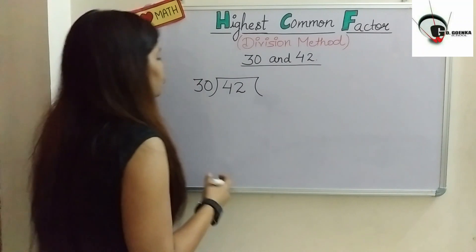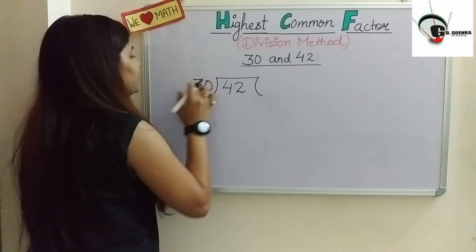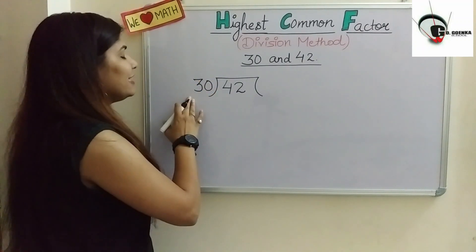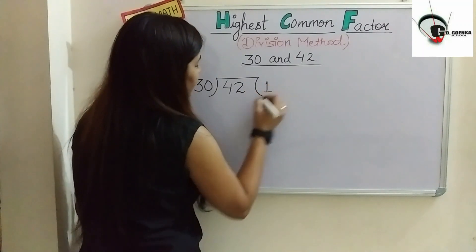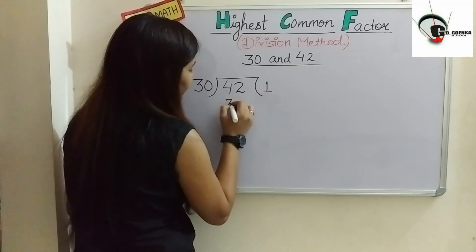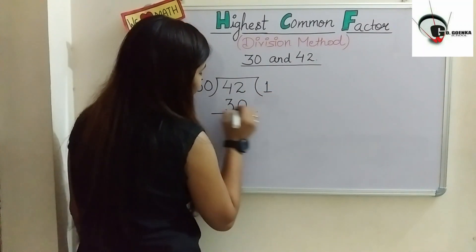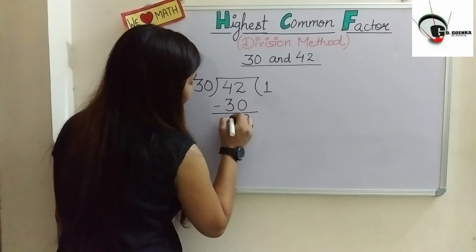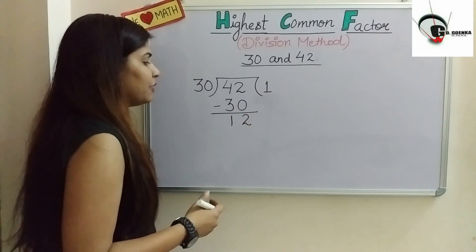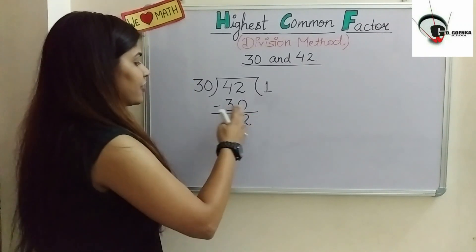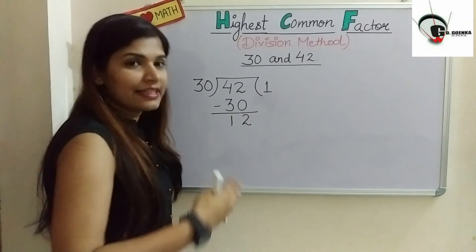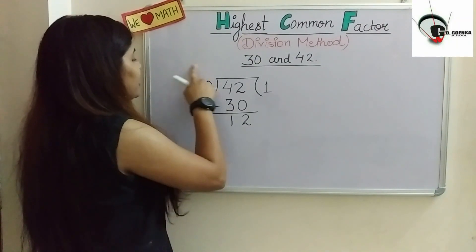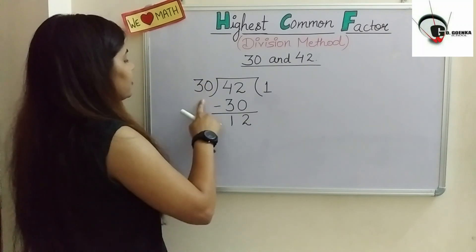So we write down 42 as the dividend and 30 as the divisor, and we do the simple division. 30 goes into 42 once; we subtract 30 and we get a remainder of 12.